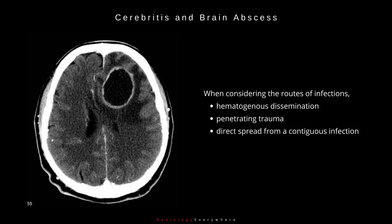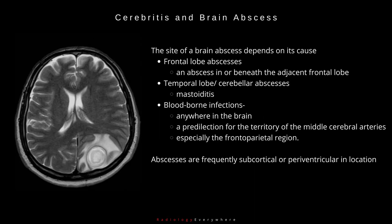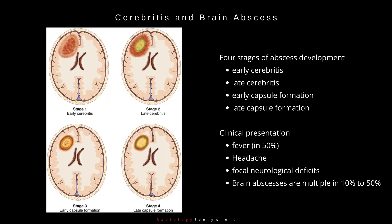Routes of infection include hematogenous dissemination, penetrating trauma, and direct spread from a contiguous infection. The site of a brain abscess depends on its cause. Frontal lobe abscesses are usually due to an abscess in or beneath the adjacent frontal sinus. Temporal lobe or cerebellar abscesses are associated with mastoiditis. Blood-borne infections can occur anywhere but have a predilection for the middle cerebral artery territory, especially the frontoparietal region, and are frequently subcortical or periventricular in location.